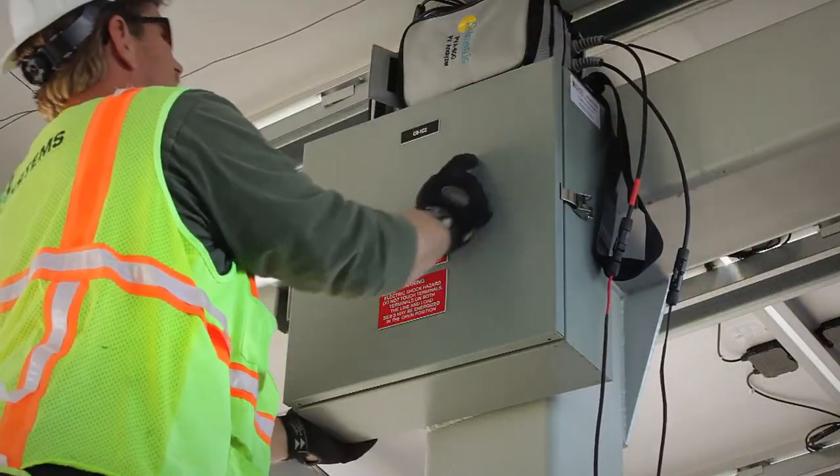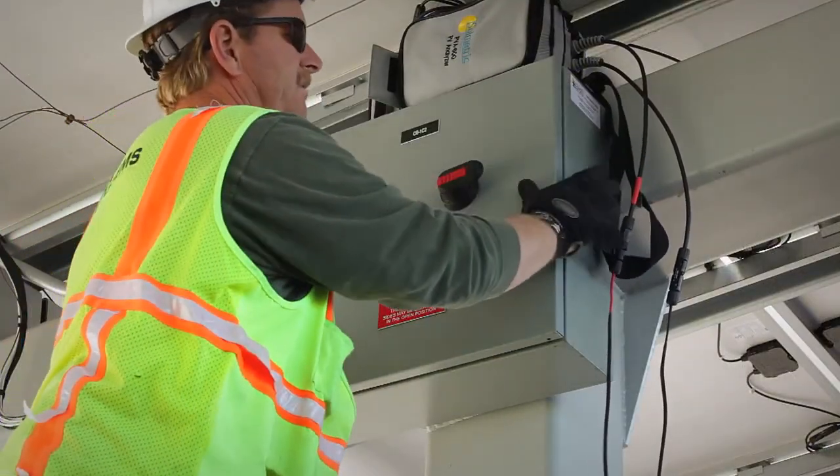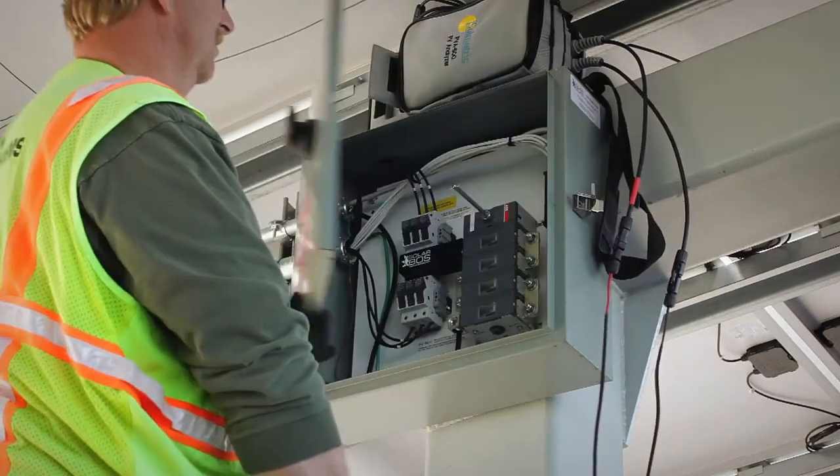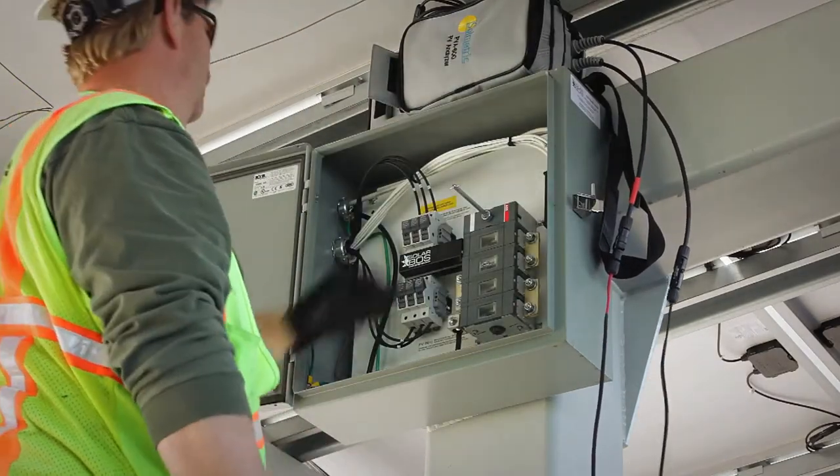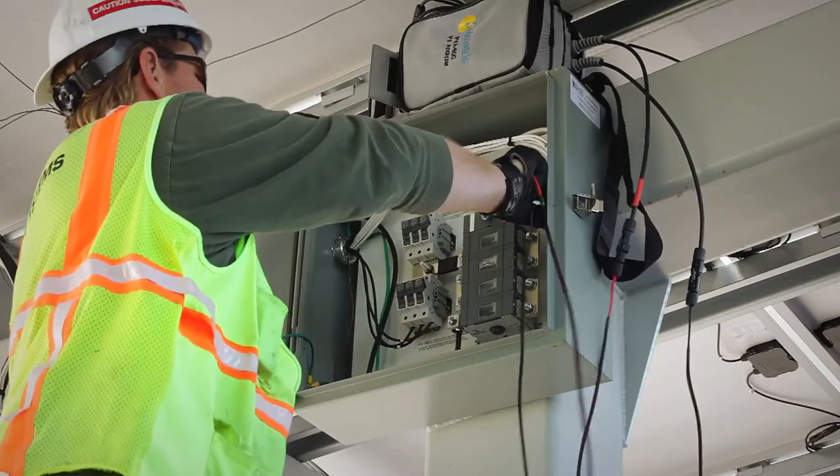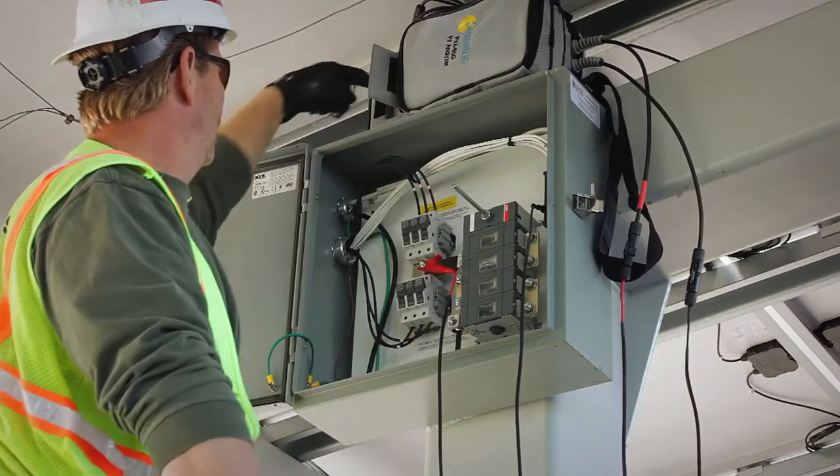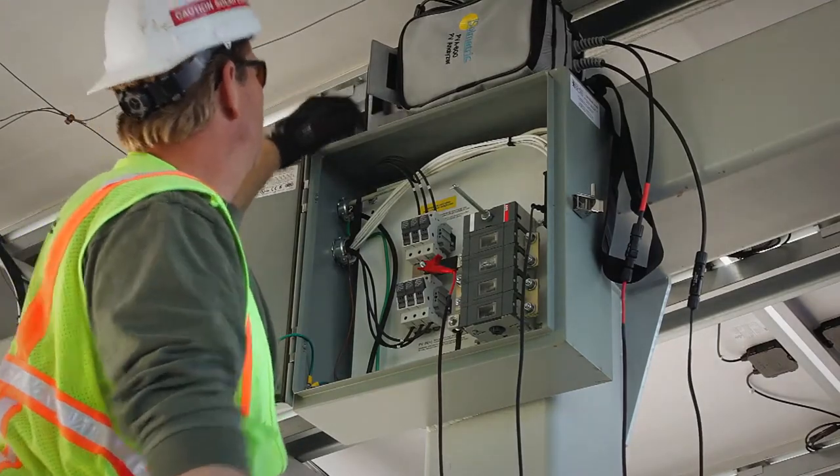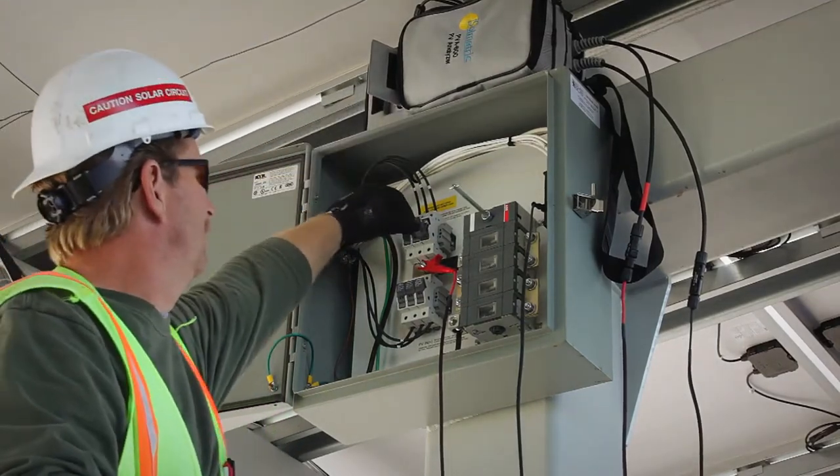Operation of a Solmetric PV Analyzer is fast and straightforward. At a commercial or utility scale installation, the PV Analyzer can be connected at each combiner box once it has been isolated from the inverter. It takes just minutes to test all the strings connected to a combiner box, making it possible to test large installations in just a few hours.